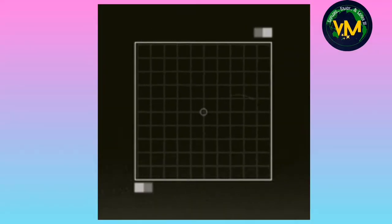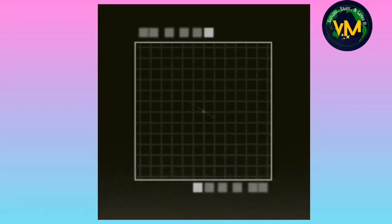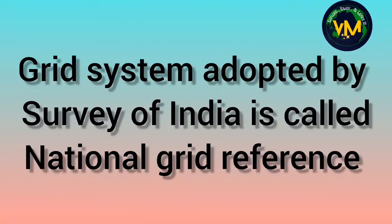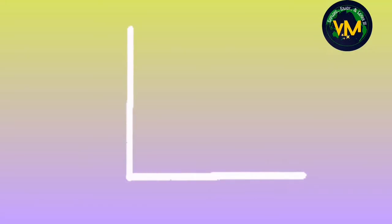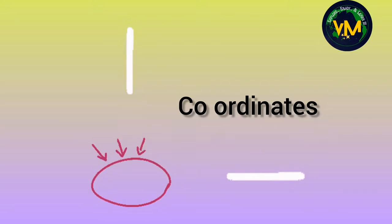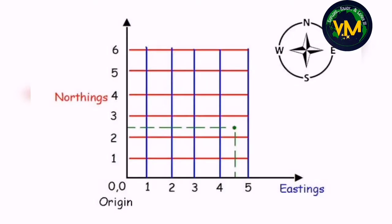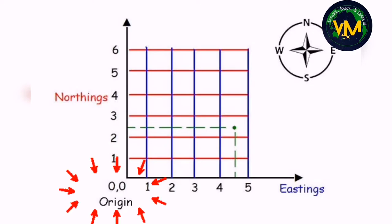What is a grid? A set of parallel and perpendicular lines that are used to find the exact location of places, objects, or points on a map is called a grid. The grid system adopted by the Survey of India is called National Grid Reference. The point at which the horizontal and vertical lines of this grid cross each other is called coordinates. This grid is numbered from 0 from the southwest corner of the map, and this is called the origin of the grid reference.